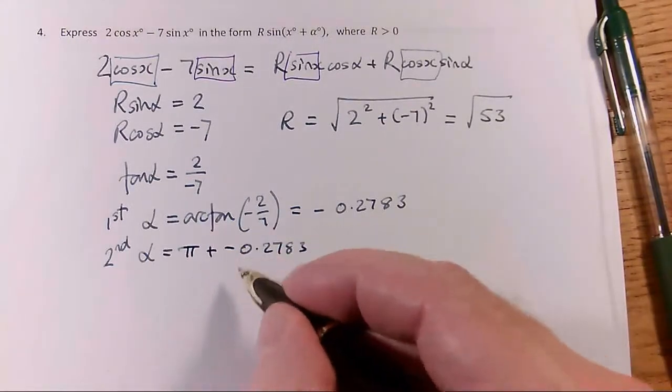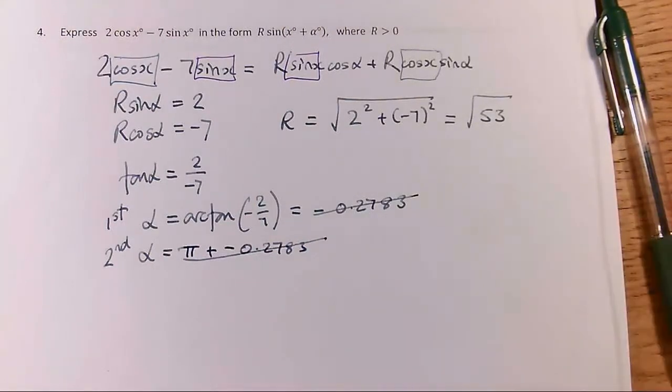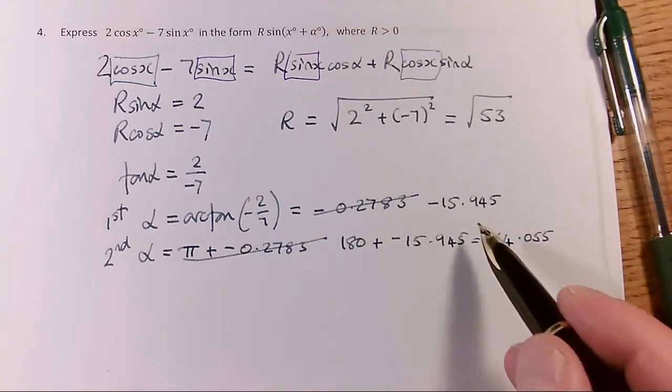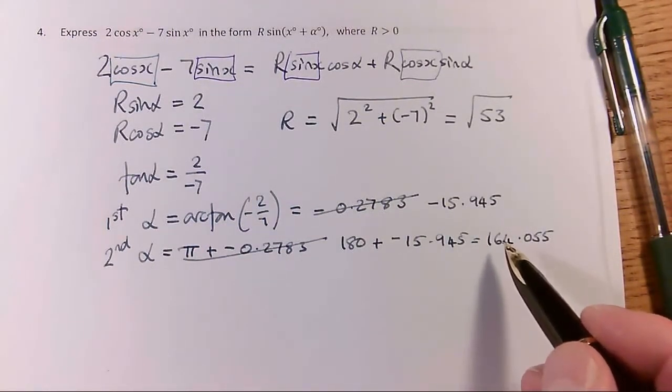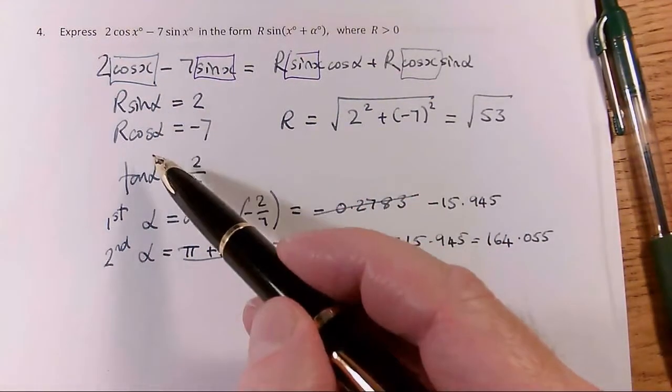What a fool. So go back. I'll just put this right. Okay, so I've got these two possible alphas. Now, these are fundamentally different angles. Only one of them is going to work. And in order to decide which one I want, I need to come back to these. R sine alpha is 2. R cos alpha is minus 7. So sine alpha is positive, and cos alpha is negative. And I need to think about how sine and cos behave.